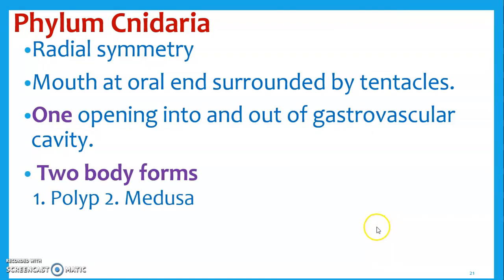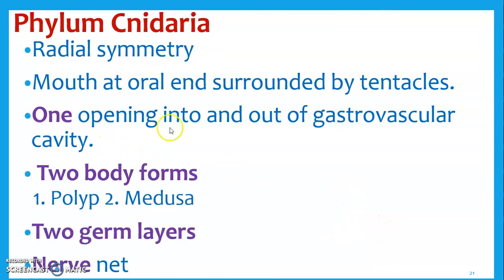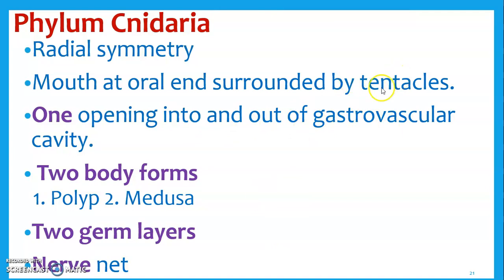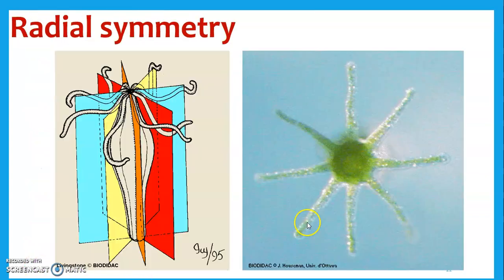Cnidarians have radial symmetry body plans. They've got one opening into and out of their basically stomach, so what comes in they have to poop back out the same way. They have two body forms — polyps and medusas — and they actually have a nerve net. So now we're starting to add a little more complexity.